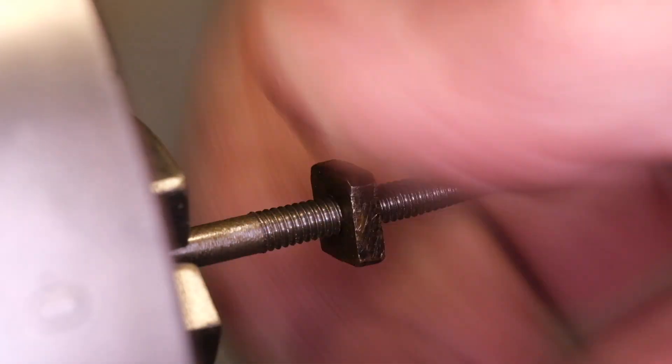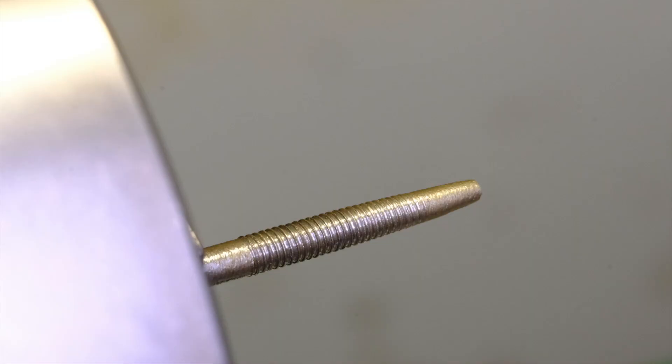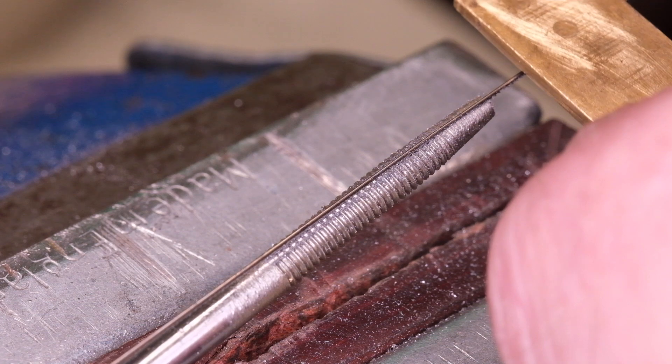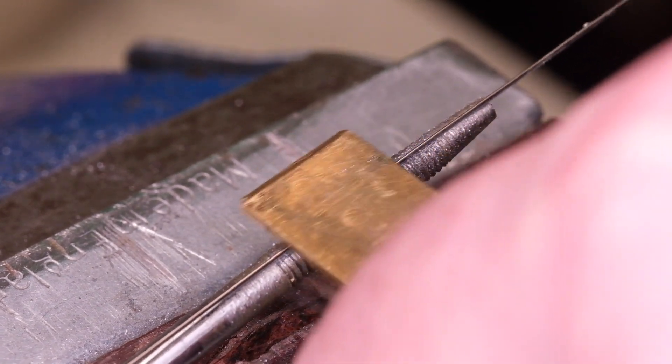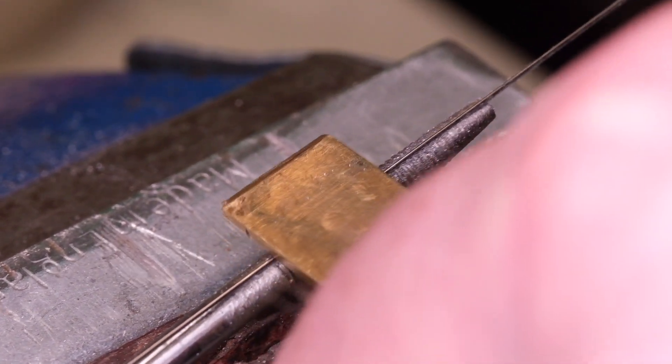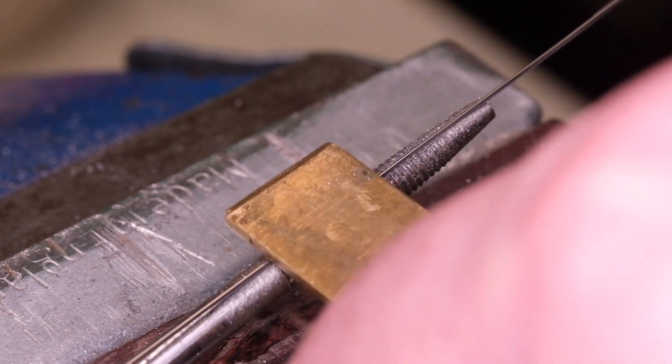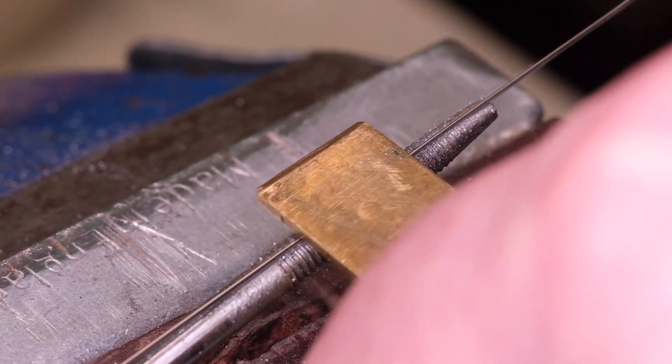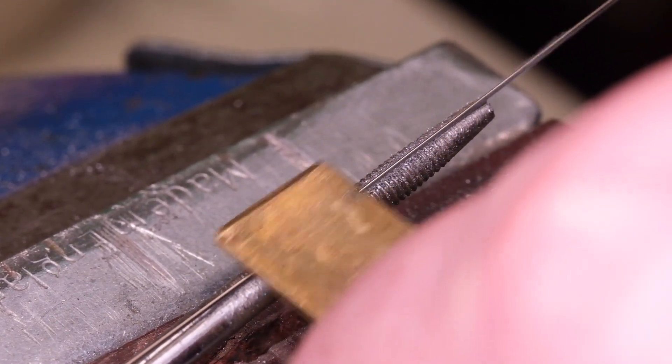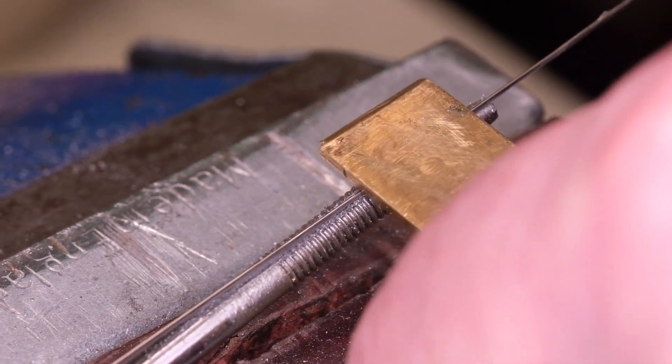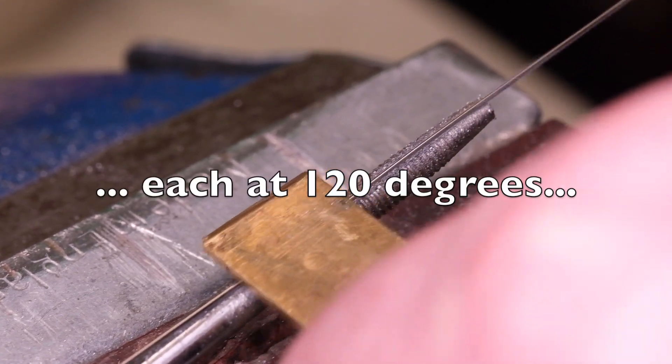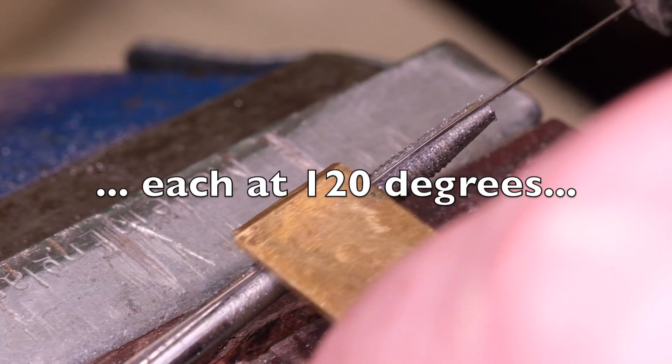Once I've done that then I'm going to cut some flutes in this tap so it does some cutting. Some historic taps actually don't have any flutes, they just make the thread by deforming the material but I think that's likely to snap off in this case. So I use a piercing saw and I just push the piercing saw blade down with my brass tweezers to make three little slits along the length of the tap.